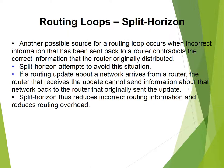Another possible source for a routing loop occurs when incorrect information sent back to a router contradicts the correct information that the router originally distributed. Split Horizon attempts to avoid this situation: if a routing update about a network arrives from a router, the router that receives the update cannot send information about that network back to the router that originally sent the update. Split Horizon thus reduces erroneous routing information and reduces routing overhead.